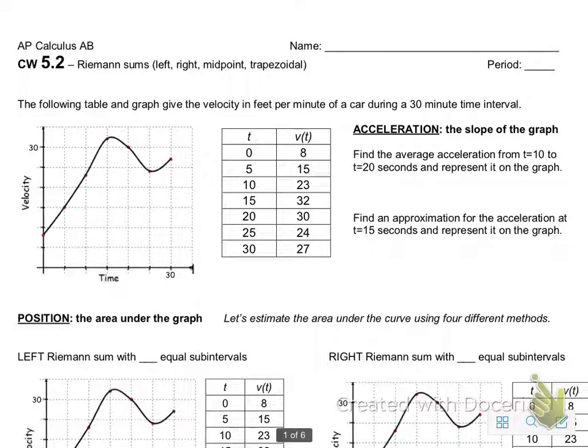If you need a hint on the first problem, average acceleration - when we're talking about acceleration, it's going to be the slope of the velocity graph, and the average acceleration is just the slope between the two points that they give you. So we're going to be looking at t equals 10 and t equals 20 right here, which means you have a point (10, 23) and then a point (20, 30), and you just find the slope between those two points.